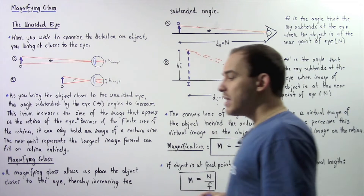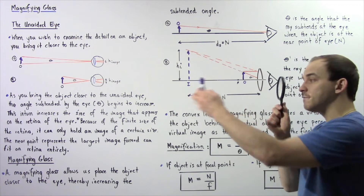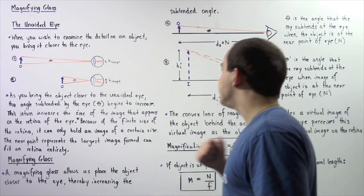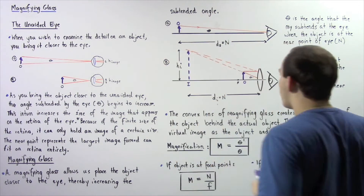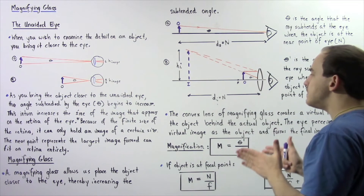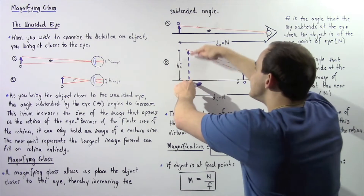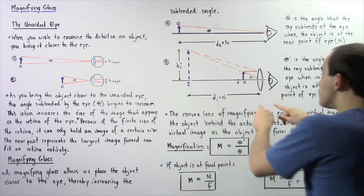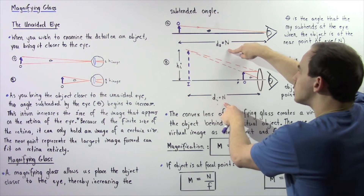In diagram B, we take our magnifying glass — which is a convex lens — and place it right in front of the eye. The magnifying glass allows us to bring the object even closer than the near point, so now the distance from the lens to the object is given by D_O, which is smaller than the near point distance. The lens creates a virtual image that is magnified, and this image is found exactly at the near point of our eye. The image distance from the lens to the image is equal to the near point N from diagram A.